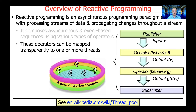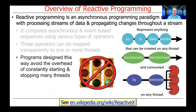The operators can also be mapped transparently to one or more threads, which are typically provided by something called a scheduler and are often organized into something called a thread pool — just a group of threads that work together to amortize the creation and destruction costs of the threads. Programs designed using reactive programming often avoid the overhead of constantly starting and stopping threads, and this is one of the main benefits we'll see when we start looking at how to program with reactive programming environments.